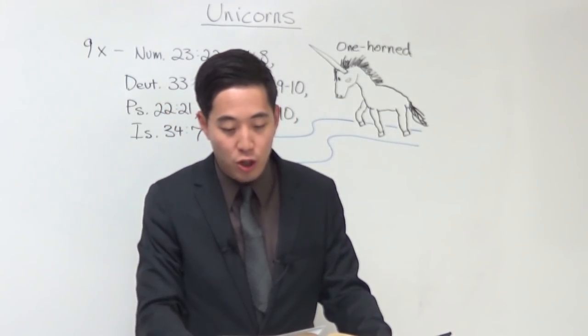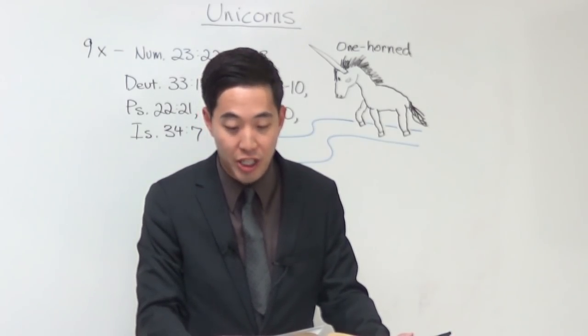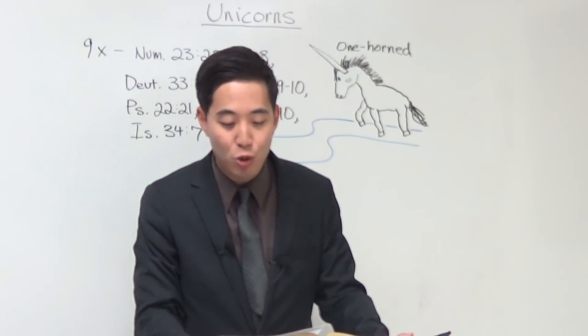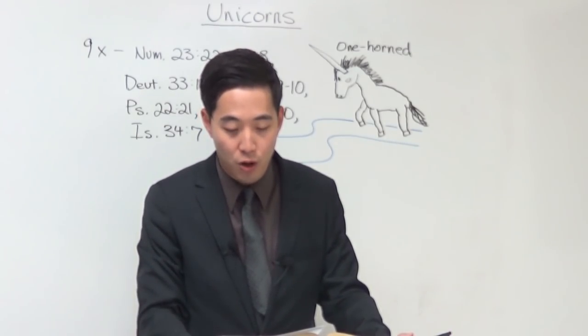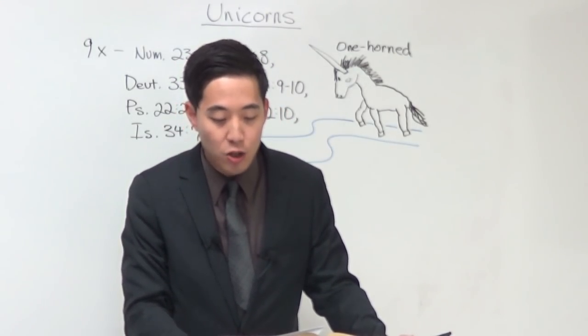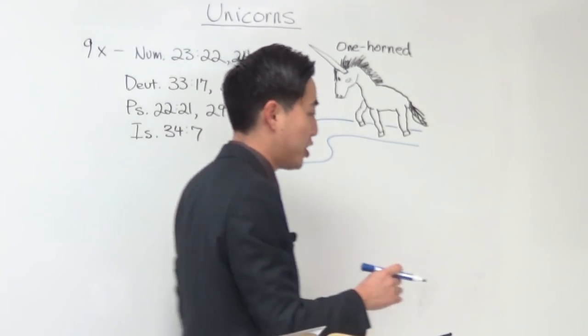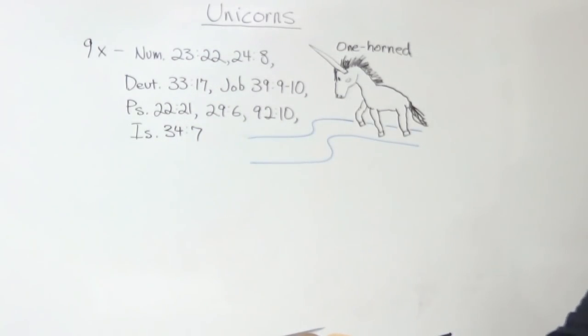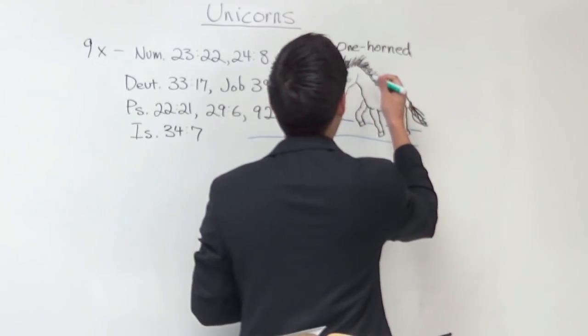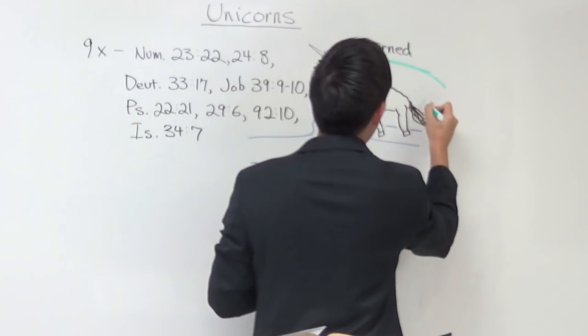Tessius described the unicorns as wild asses as large as horses that had white bodies, red heads, and dark blue eyes, and a horn on the forehead, which is about a foot and a half in length. He also said that the horns were multicolored. Now, isn't that interesting? So, they were like multicolored, kind of like a rainbow, kind of like a rainbow unicorn. So, it's like a multicolored unicorn.